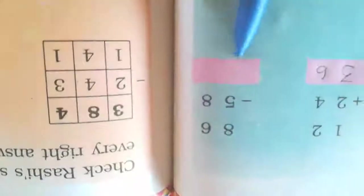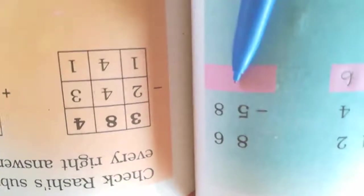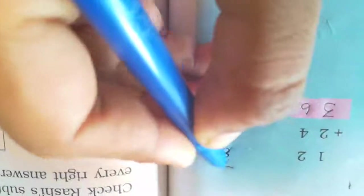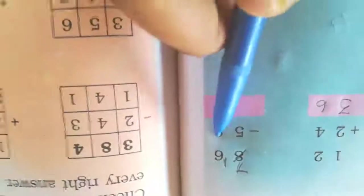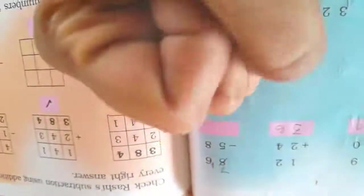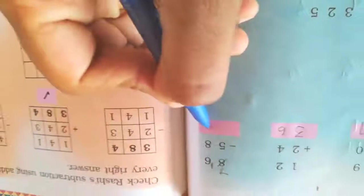Here, 86 minus 58. Look at the ones number: 6 minus 8 is not possible, so we have to borrow. Here it will become 7, here it will become 16. So keep 16 in your mind; count after 8: 9, 10, 11, 12, 13, 14, 15, 16. Before you had 5 fingers, now 3 fingers — totally 8 fingers. So the ones digit is 8.